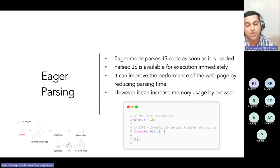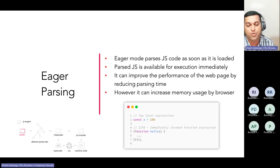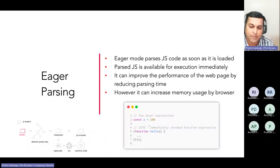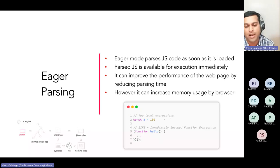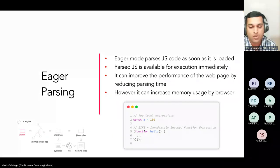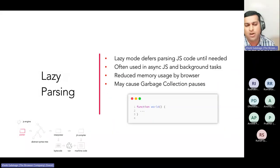You might wonder what eager parsing has to do with how you write your JavaScript. Top-level expressions like `const a = 100` or IIFEs — immediately invoked function expressions, where you wrap a function in braces and immediately call it — are all parsed immediately by the JavaScript engine as soon as it sees them. These are called top-level expressions or IIFEs for short.